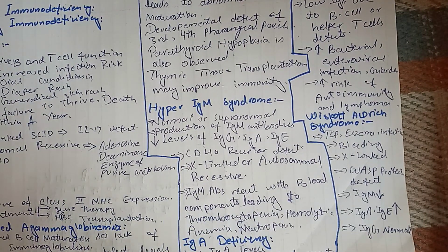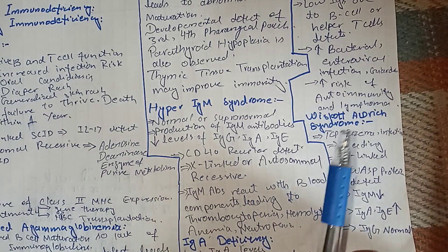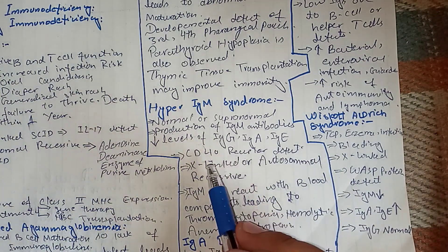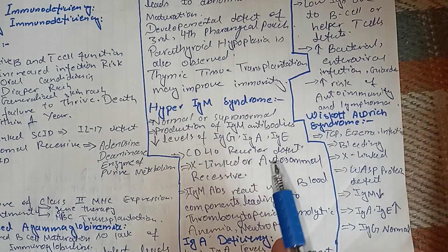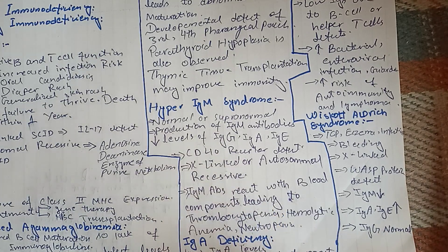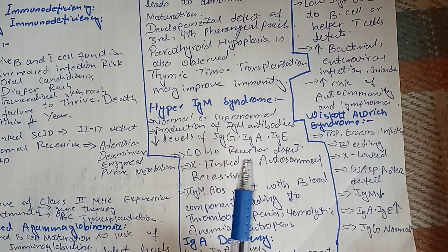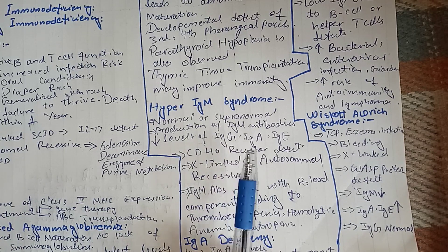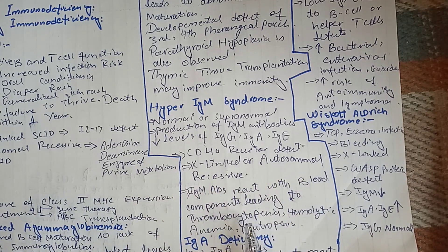Hyper-IgM syndrome is characterized by normal or supernormal production of IgM antibodies, while other classes — IgG, IgA, IgE — are low. The defect is in the CD40 receptor, which can be X-linked or autosomal recessive. This CD40 receptor defect causes defective class switching, so IgM remains normal or elevated while other classes are decreased. The elevated IgM may react with blood cell components, leading to cytopenias including thrombocytopenia, hemolytic anemia, and neutropenia.